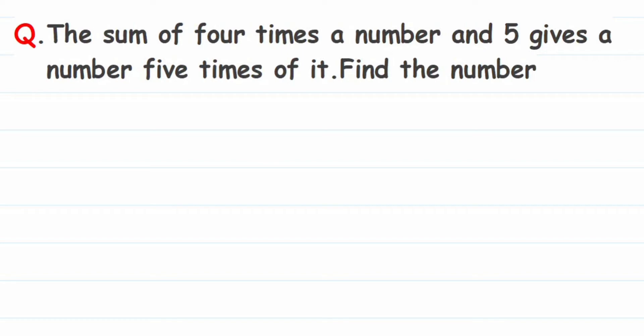Hey everyone, here is a question from a linear equation or simple equation. The question is: the sum of four times a number and five gives a number five times of it. Find the number. We have to find the number, and they have given a relationship between the number and the other numbers.